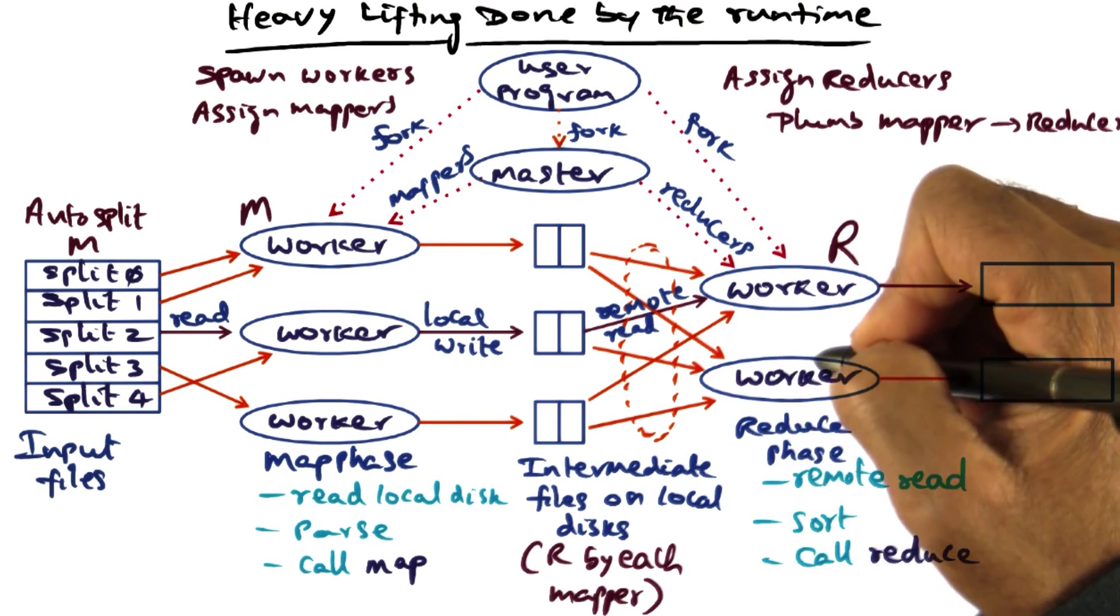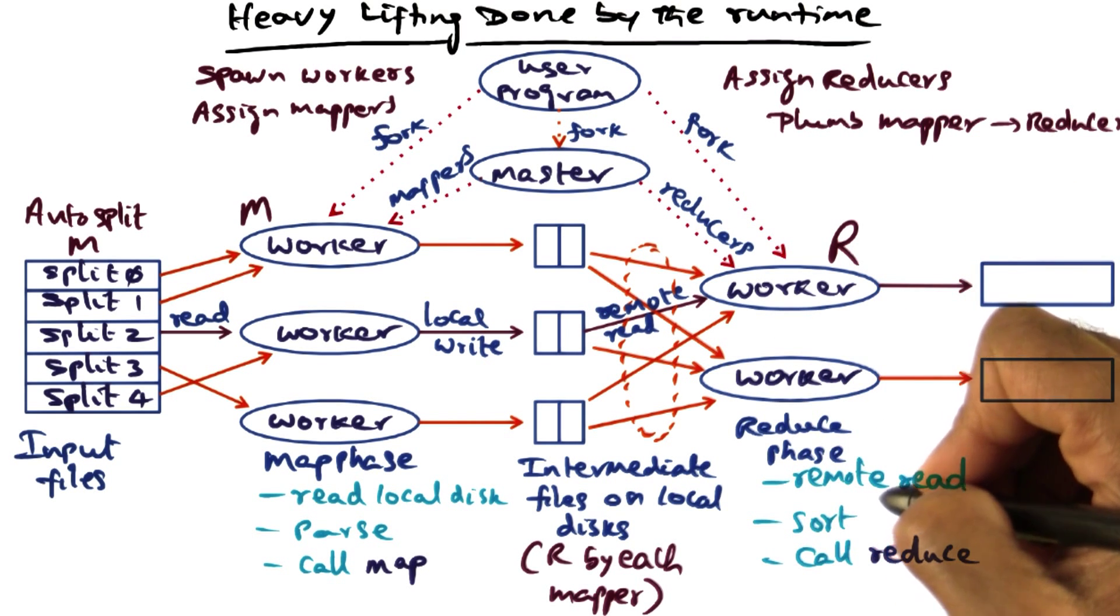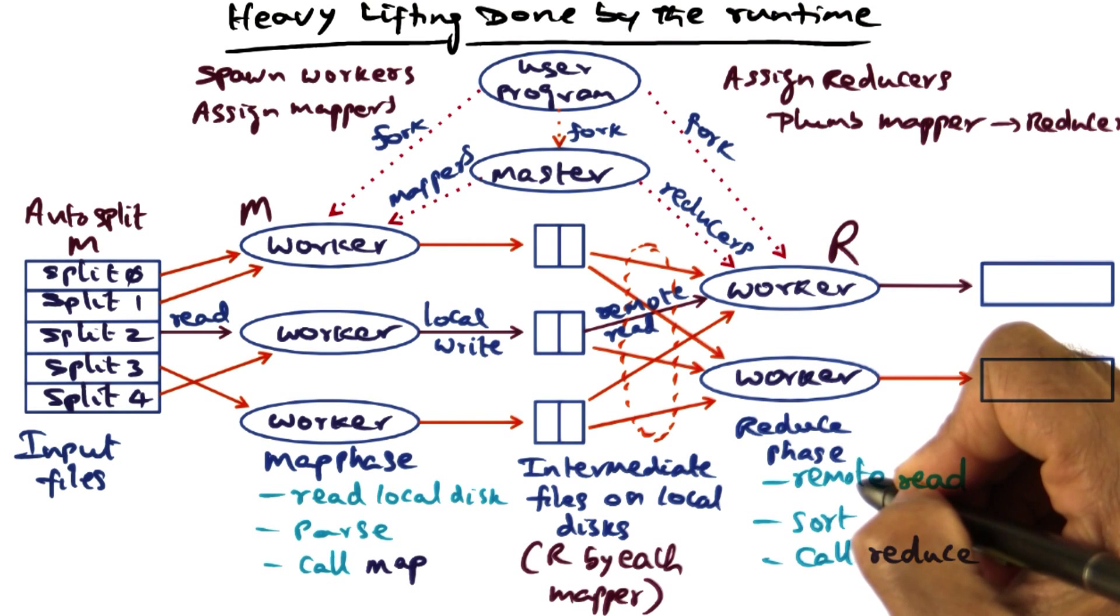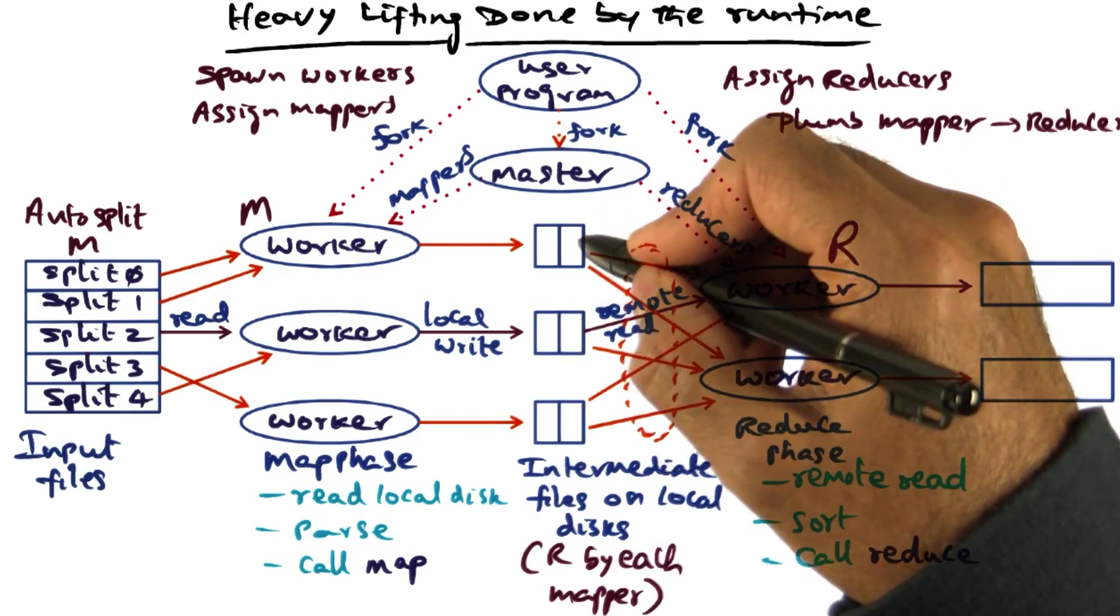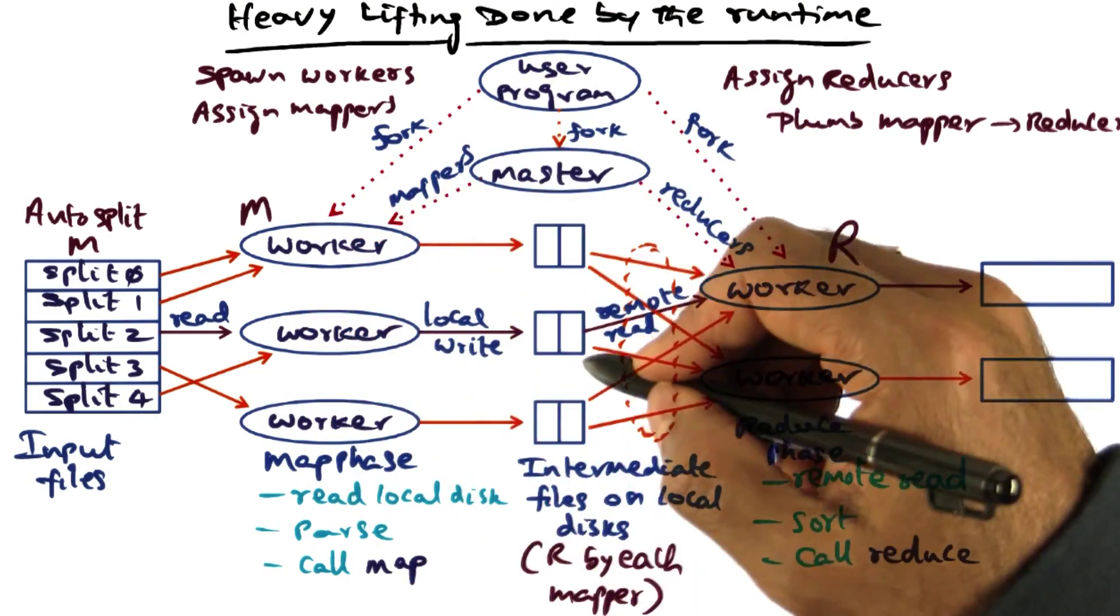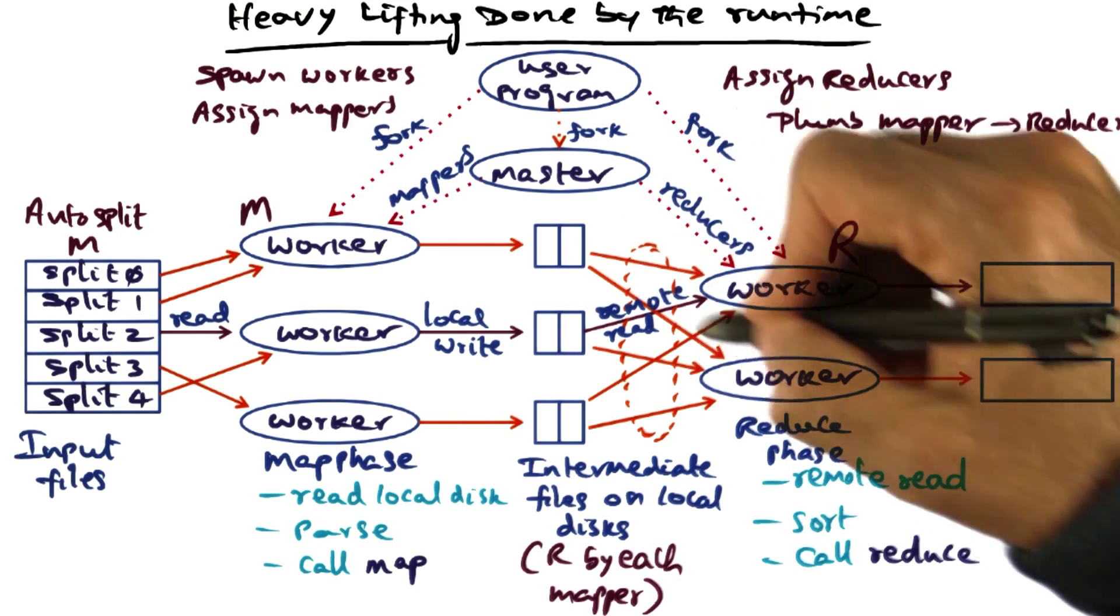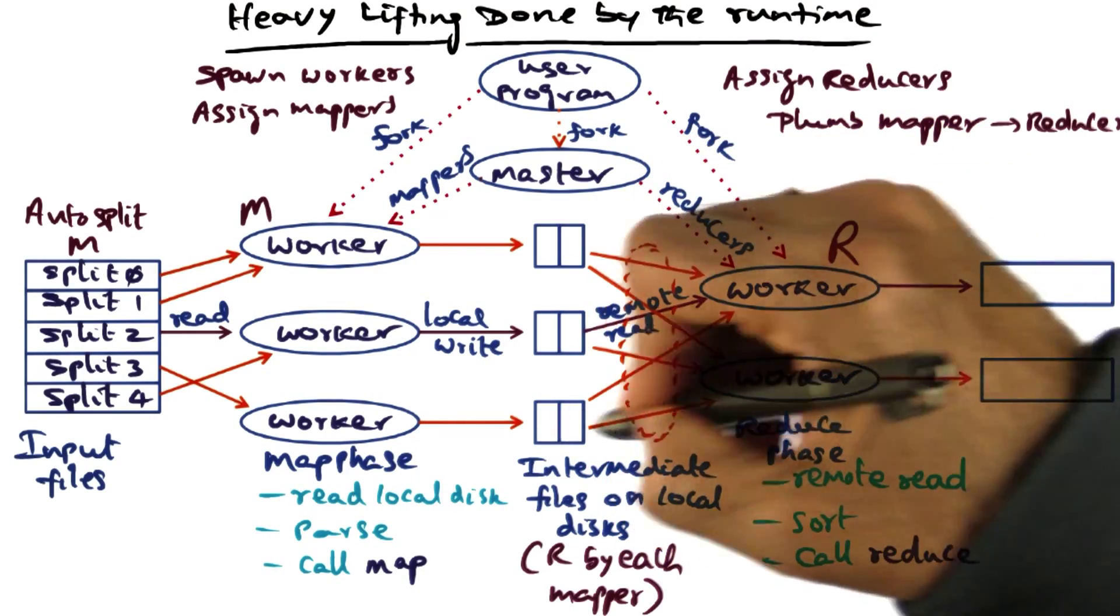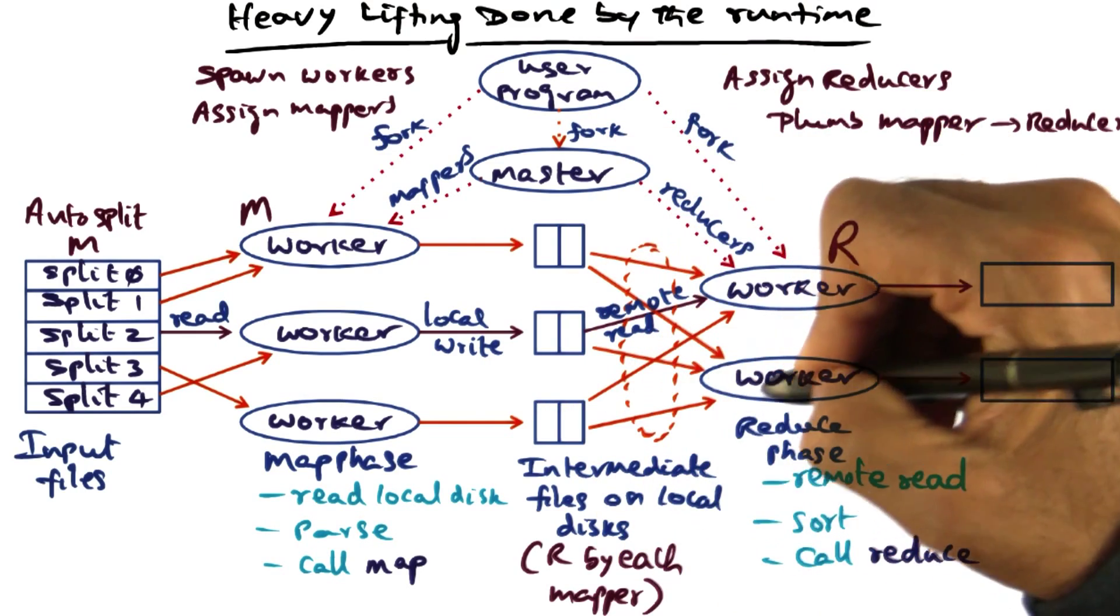This is part of what I mean by the plumbing that the runtime system provides is to recognize that for this reduce operation to work, it needs the mapping results from all the M nodes that carried out the map function. And so it is going to do RPC in order to get all this data from all the local disks of the nodes on which the map is executed.